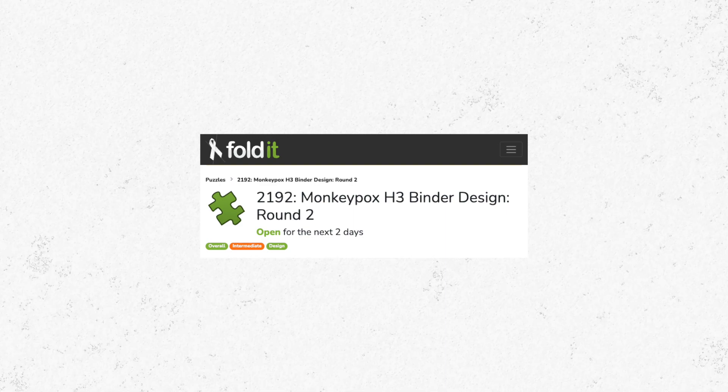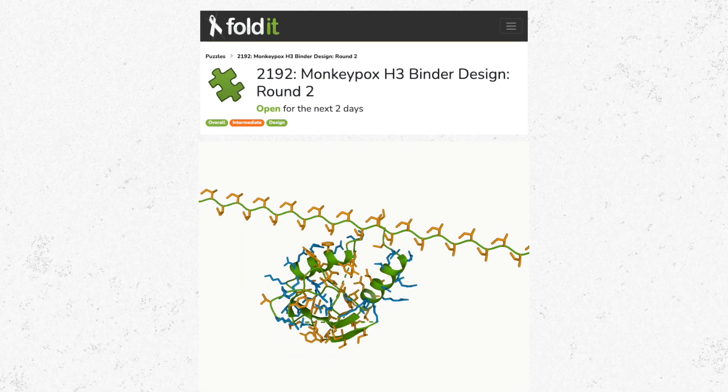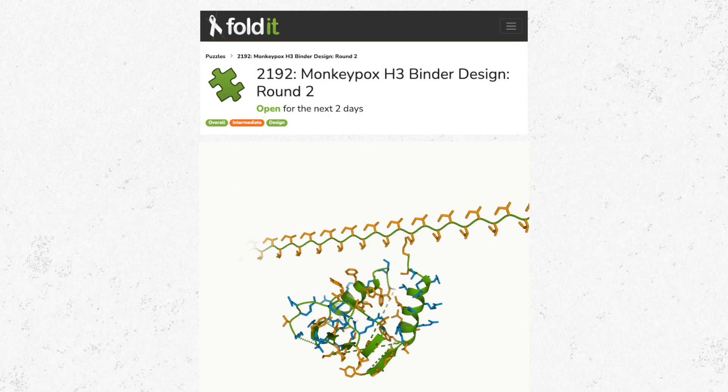To get around this, our monkeypox puzzles rely on a predicted structure of a monkeypox protein named H3. We actually made these predictions with AlphaFold. We don't know everything about how this protein functions, but there is some evidence that it binds to human cells, so it could be important for the virus's infectious activity. If we can design a protein that sticks to the monkeypox H3 protein, we could use it to detect the virus in human blood samples and maybe even slow infection in infected individuals.